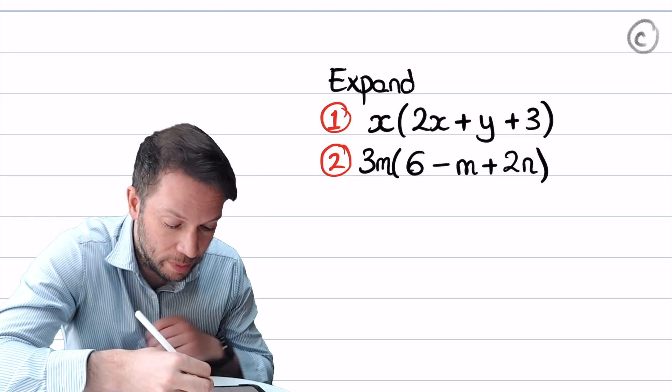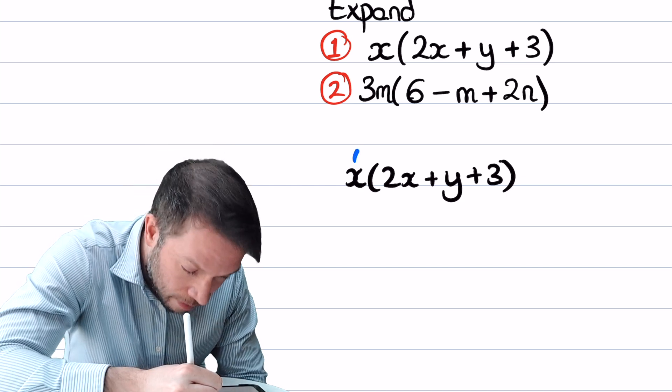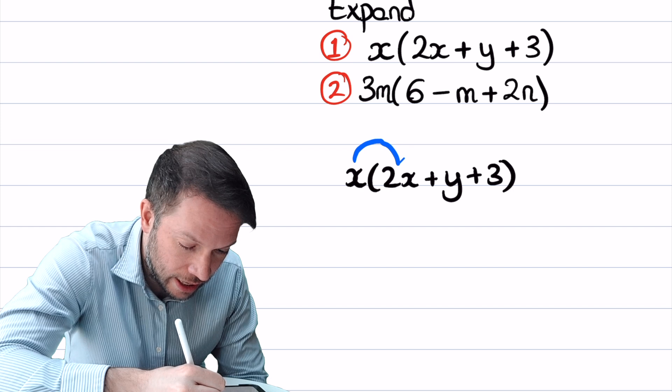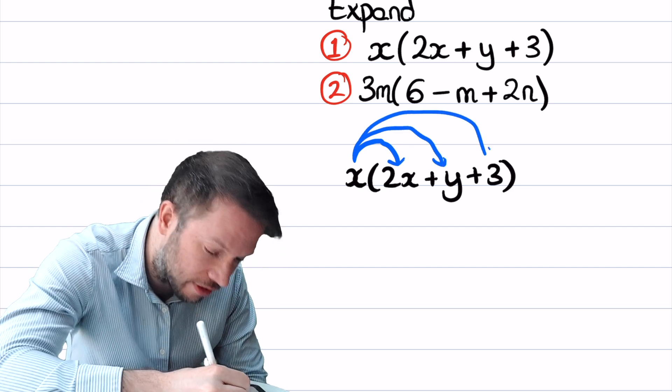So let's do this first one, we'll copy it out. We do the term in front of the bracket, which is the x, multiplied by each thing inside the bracket. So the x times the 2x, the x times the y, and the x times the 3 like that.